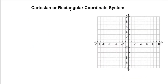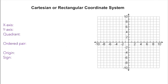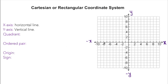Now let's go over some terminology using a different graph where each grid represents one unit. Recall what we know: the x-axis is a horizontal line going left and right. The y-axis is a vertical line going up and down. The x-axis goes left and right, the y-axis goes up and down, and when these two intersect we call that point the origin, which is always (0, 0).